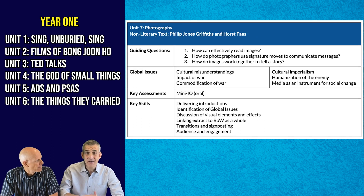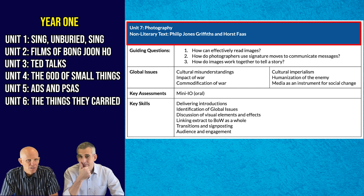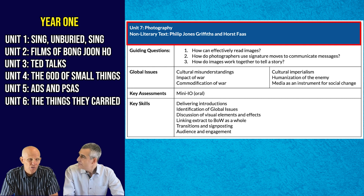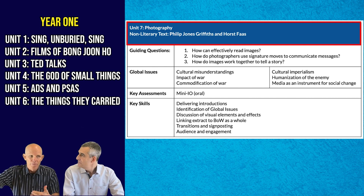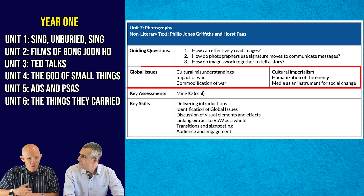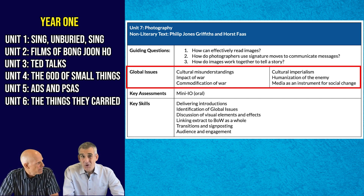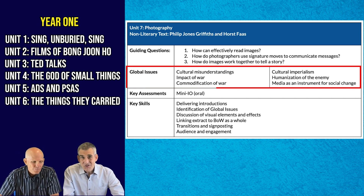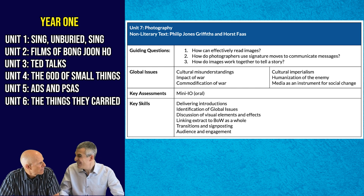We then follow this up with a unit in photography, sort of to end year one. It's working on those visual literacy skills, and a lot of the photography we choose relates directly to all of the literary works we've studied. We have war photography, we have photography from India, and we look at a whole variety of photographers. It's a really nice culmination of the whole year where we start looking at different images and how they match up to the different literary units we've done. It's pretty spectacular, and kids love it.